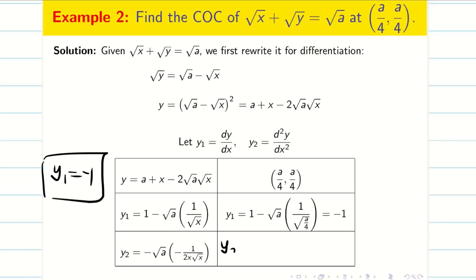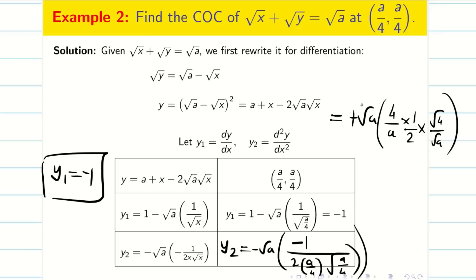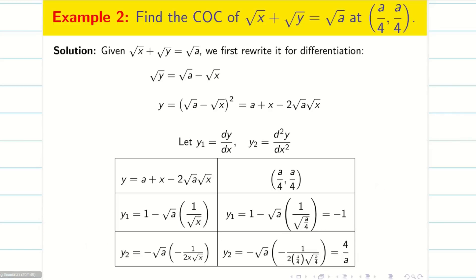For y₂, substituting x = a/4: −√a · (−1/(2·(a/4)·√(a/4))). Minus times minus gives plus: simplifying 4/a · 2 · (√4/√a), the √a terms cancel, 2·2 cancel, and √4 = 2, giving 4/a. So y₂ = 4/a. I have now found y₁ = −1 and y₂ = 4/a.